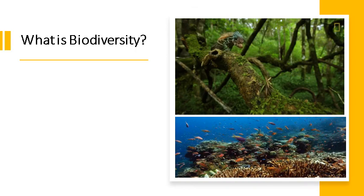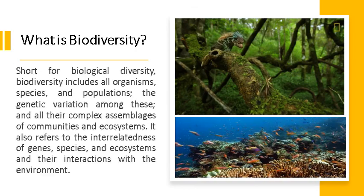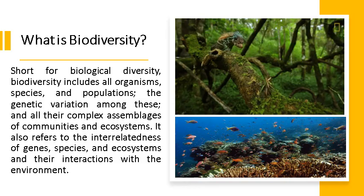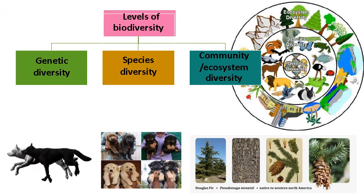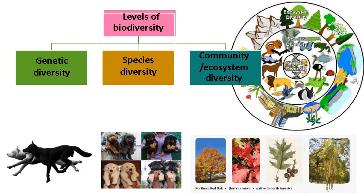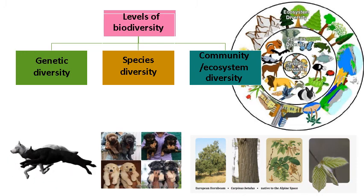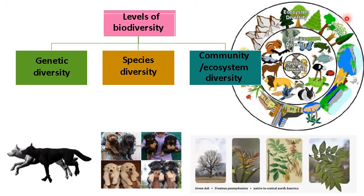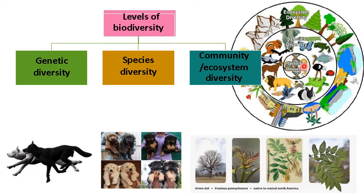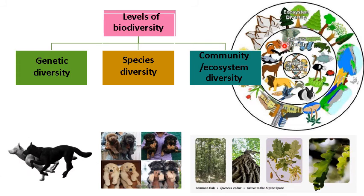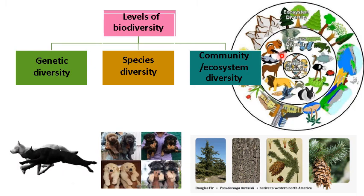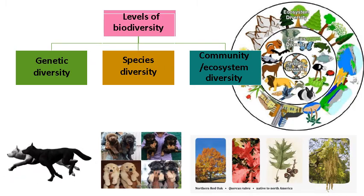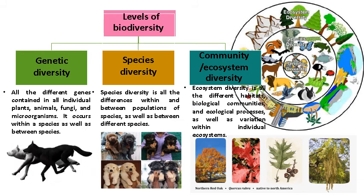Now we will learn about the different kinds of biological diversity at three levels. The biological diversity could be divided into three parts: genetic diversity, species diversity, and community or ecosystem diversity. As you can see in this picture, the lower level is genetic diversity, then species diversity, and the higher level is ecosystem diversity. We will discuss each one by one.